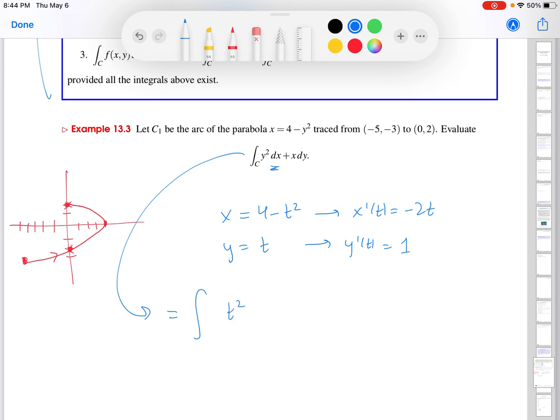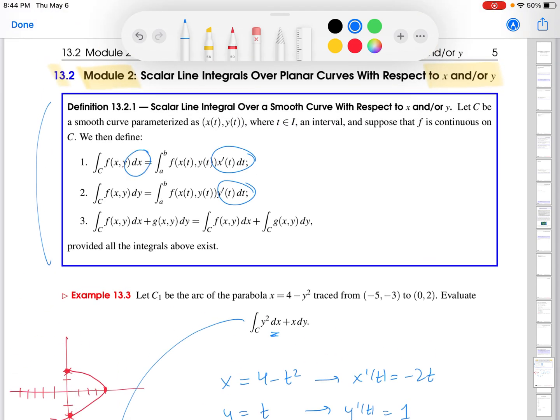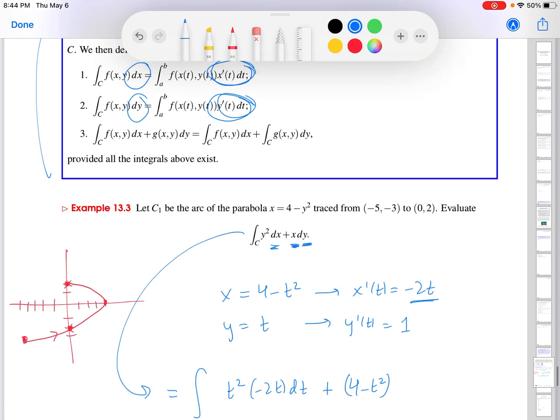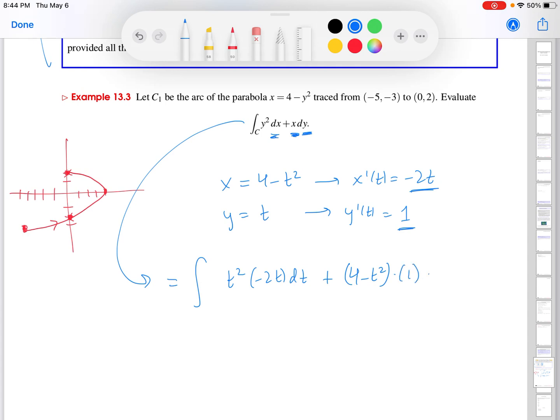So then I'm going to go here, and this is going to be the integral of y squared, which is t squared, times dx, which is what's being converted to x prime of t dt. So that's minus 2t dt. And then plus x, which is 4 minus t squared, times dy. Dy is what's getting converted to y prime of t dt. Y prime is 1 and then dt. And then I got to figure out what t ranges from. Okay, so t here is equal to y. So if I look at my bounds for y, then I can figure out what my bounds for t are. They'll be the same. Notice that y starts over here at the point, negative 5, negative 3. Excuse me. So that is the lowest bound for t. And then goes all the way up here to the point y equals, to the location y equals 2. So that is my upper bound for t. So I'm integrating from minus 3 to 2. Those are my bounds for t.